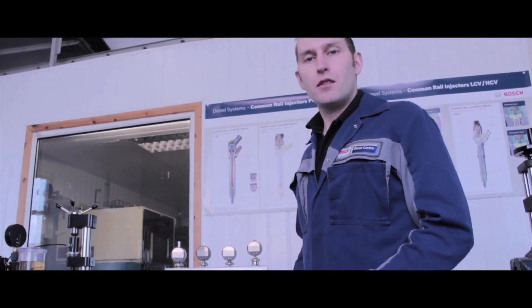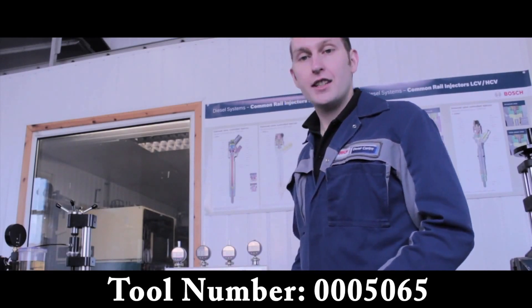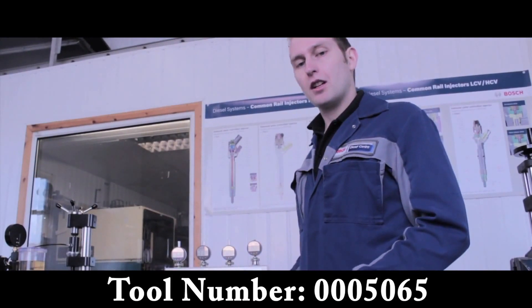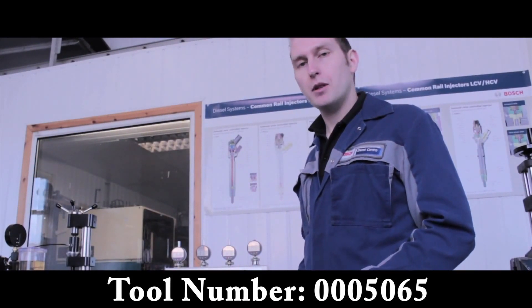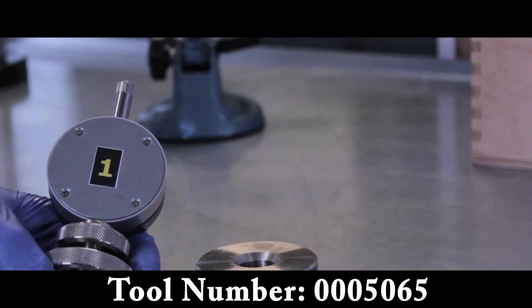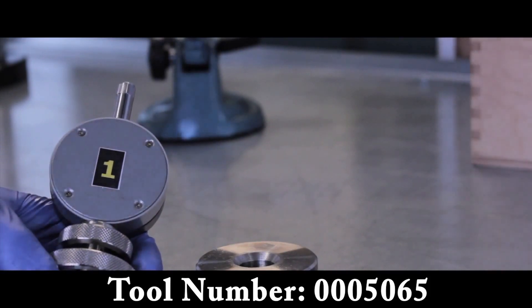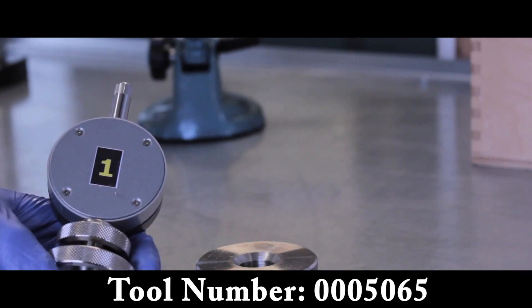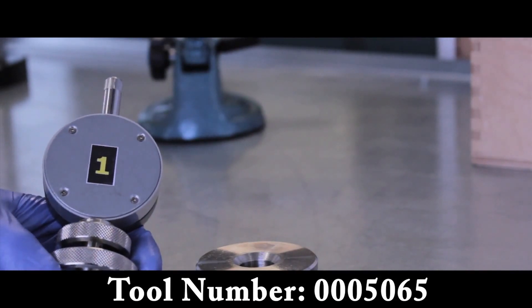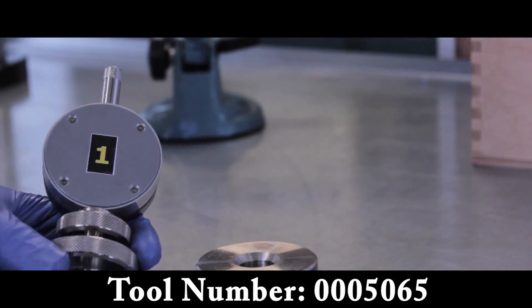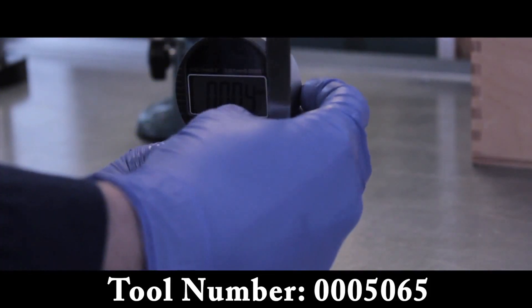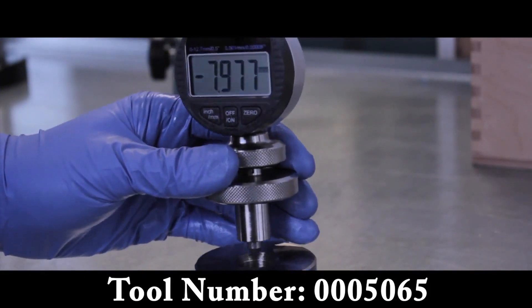These are the 0005065 gauge set and micrometer. These are used to check calibration of the injectors, ensuring that the correct shims are fitted during the rebuild procedure. Okay, this is gauge one. This is for checking the height between the pilot valve and the pilot ball. We're hoping to achieve a perfect zero for back leak allowance. So place the gauge in, zero, and simply slot into place.